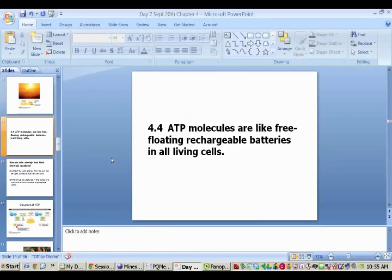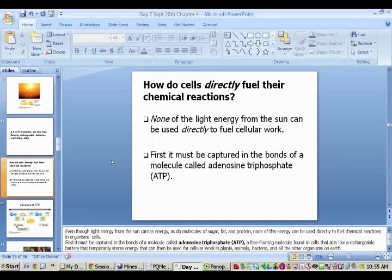This type of energy that they are storing is called an ATP molecule. It's basically like a free-floating rechargeable battery inside of all living cells. None of the light energy from the sun can be used directly to fuel cellular work. It has to be captured in the bonds of a molecule called adenosine triphosphate. This ATP molecule temporarily stores the energy until it's ready to be used for cellular work in plants, animals, bacteria, and all the other living organisms here on earth.